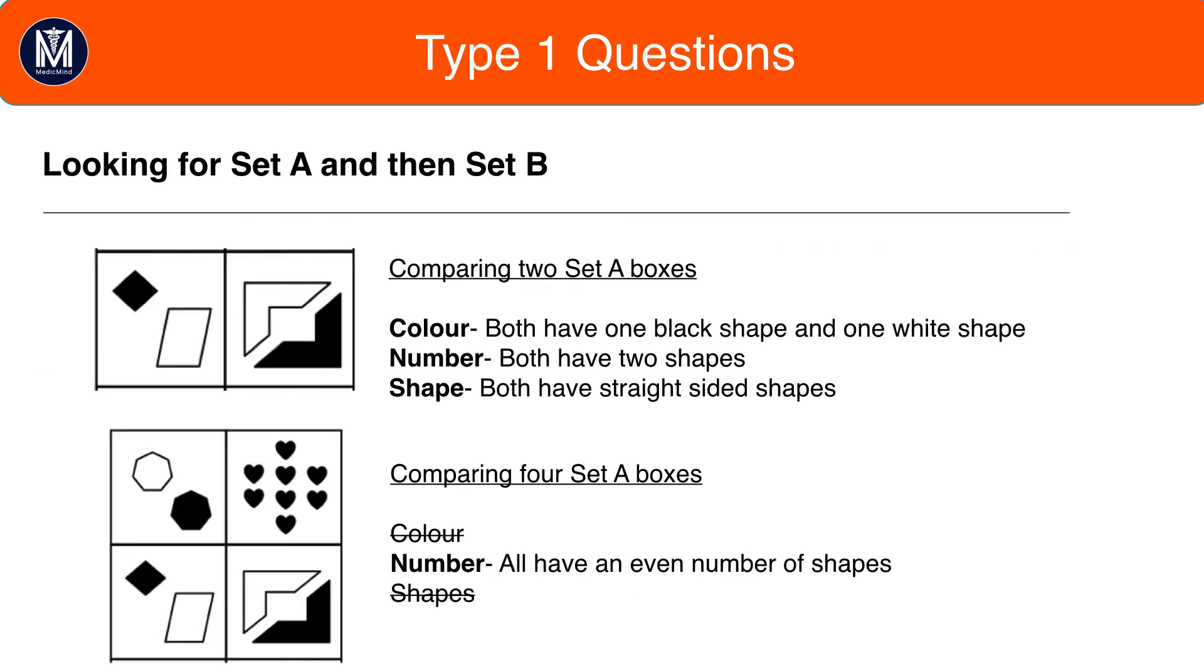So, we've taken the top two, and on the top of the slide, we've got the two Set A boxes. So, let's compare them. Well, they both have one white shape, one black shape. Okay, this is potential for a pattern. In terms of number, they both have two shapes. Again, potential.